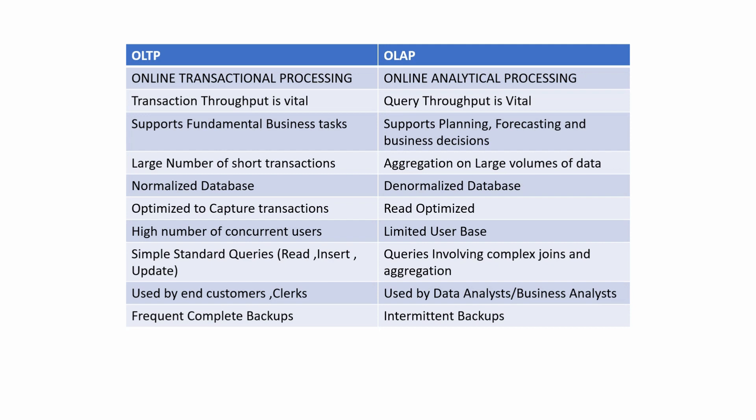OLTP applications support fundamental business tasks, while OLAP is used for planning, forecasting, and taking informed business decisions. OLTP deals with a large number of short transactions — when thousands of people are ordering on an e-commerce application, thousands of rows are being inserted in parallel into the order table. In contrast, all these transactions are loaded from the OLTP system into the OLAP system, where aggregation on large volumes of data is performed to identify patterns.